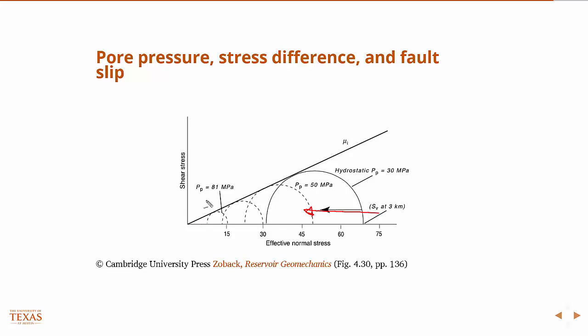Because in the effective, this is effective normal stress. So if I increase the pore pressure, I'm shrinking the Mohr's circle.